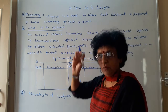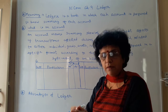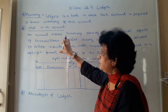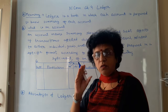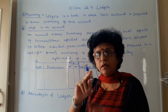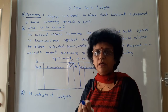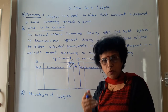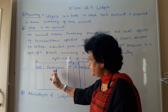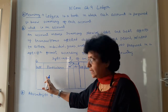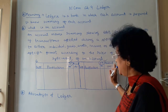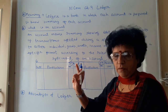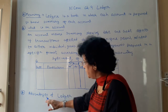So the ledger is a book in which all the accounts are opened and we try to know the summary of each account. Next are the advantages of ledger. Why do you prepare ledger? Number 1: Ledger gives you information regarding the balance of each account. Number 2: While knowing the balance, you are able to prepare the trial balance. Number 3: With the help of trial balance, you are in a position to prepare the final account.